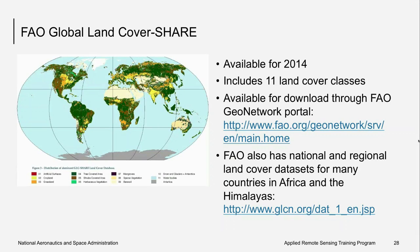The FAO Global Land Cover Share database provides a set of major thematic land cover layers resulting from a combination of the best available high-resolution national, regional, or sub-national land cover databases. These products are produced at a resolution of one kilometer. The data includes 11 land cover classes and is distributed in separate layers in GeoTIFF format, all available through the FAO GeoNetwork portal. The FAO also has national and regional land cover datasets for many countries in Africa and the Himalayas.